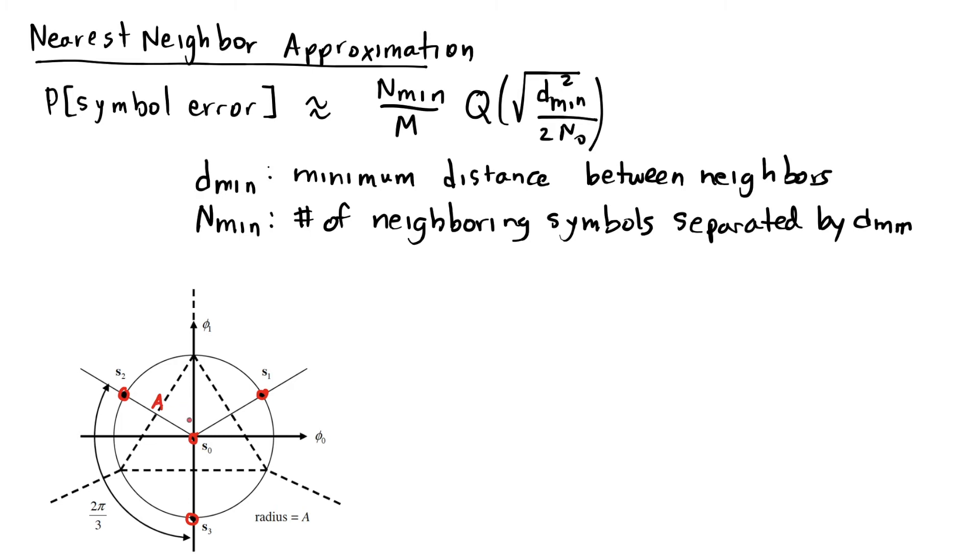while some other distances between neighbors, so s2 and s1 are neighbors, but that distance is larger than a. It happens to be square root of 3 times a. So dmin here, because we have these two different distances, one is a and one is square root of 3a, the minimum distance is a,